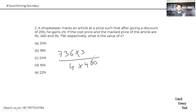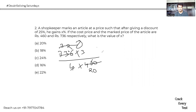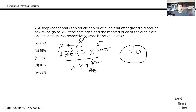So 736 × 3/4 gives us 552. Dividing 552 by 460 and simplifying: 552/460 = 1.2. So the SP is 1.2 times the CP, meaning x equals 20 percent profit.